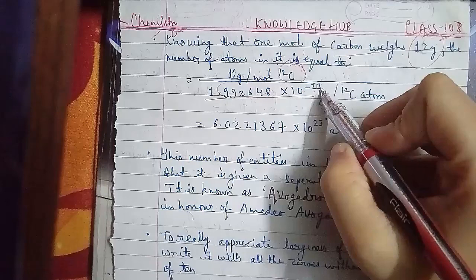Basically, for any substance, one mole is always equal to 6.022 × 10²³ entities of that particular substance. Having defined the mole, it is now easier to know the mass of one mole of a substance. The mass of one mole of a substance in grams is called the molar mass.